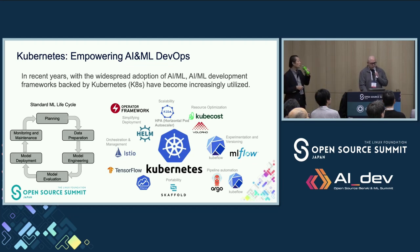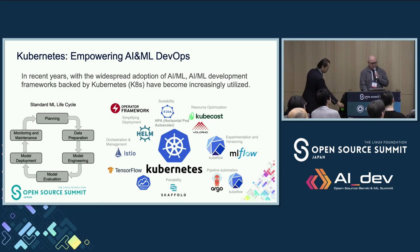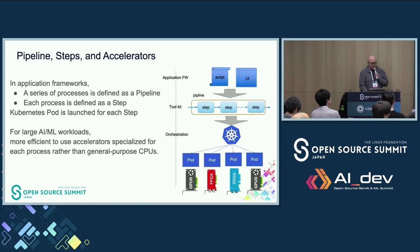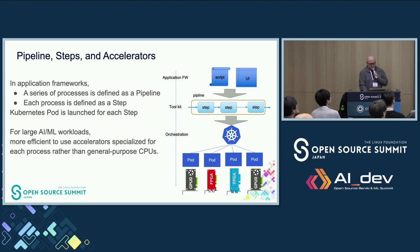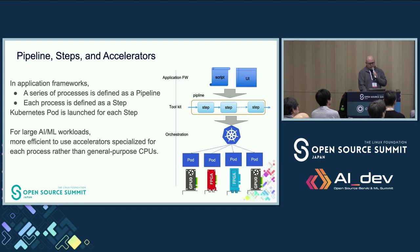The AI/ML workloads processed on the cloud or on-premise servers have recently increased. Kubernetes is a great tool and many AI/ML development frameworks backed by it have become increasingly utilized. In these application frameworks, a series of processing is defined as a pipeline and each process is defined as a step. A Kubernetes pod is launched for each step. Generally, AI/ML workloads are large, so we would like to use accelerators specialized for each process rather than CPUs.